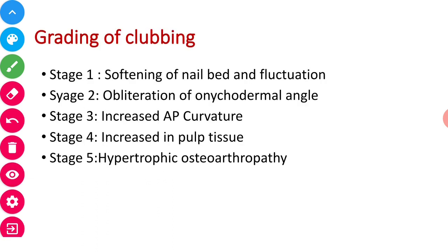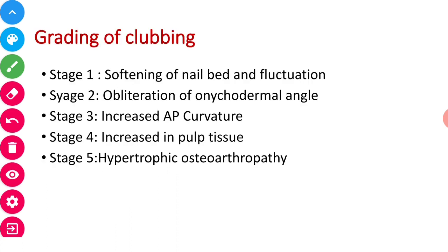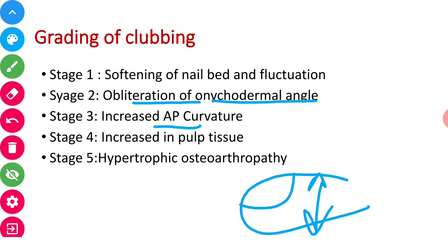Next is the grading of clubbing. We divide it into four stages for grading clubbing. First is the softening of the nail bed and fluctuation. Second is the obliteration of onychodermal angle or Lovibond's angle. Then anteroposterior curvature increases. And then pulp tissue increases. And last is the hypertrophic osteoarthropathy. This is the grading of severity.